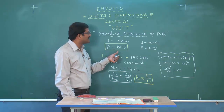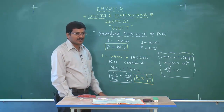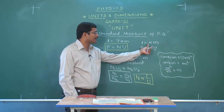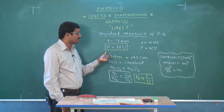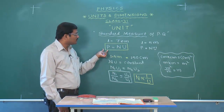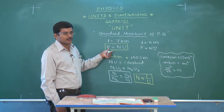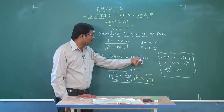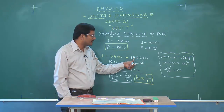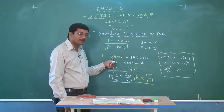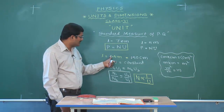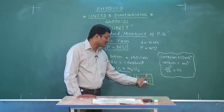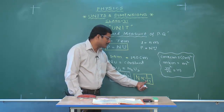To recap: a unit is a standard measure of a physical quantity. A physical quantity P = N × U. The physical quantity is constant regardless of unit — 1.5 meters equals 150 centimeters. If the numerical value increases, the unit must be decreasing. N₁U₁ = N₂U₂, and the numerical value is inversely proportional to the choice of unit.